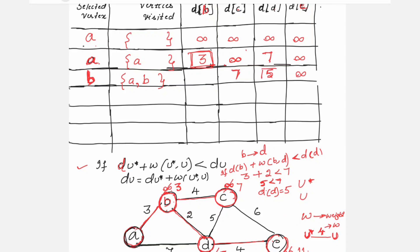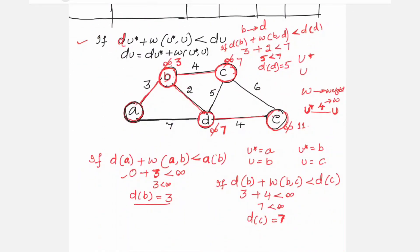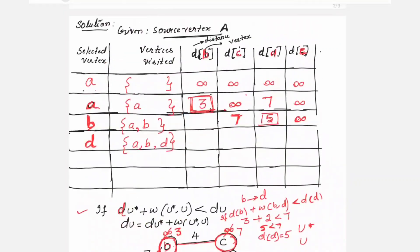The minimum is 5, corresponding to node D. Include D in the selected vertex and visited vertices — visited list is now A, B, D. The distance 3 for B is already finalized. Remaining values to check are 7 and infinity. In this step, compute D to C and D to E.